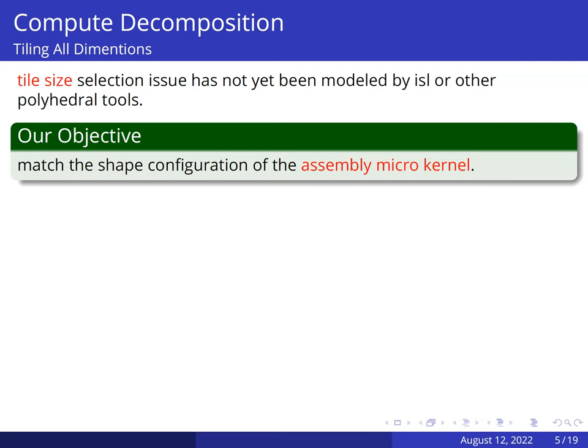Now, I will introduce the first task of our work, Compute Decomposition. That is, break down the code into smaller, other independent blocks such that the compute processing elements can work in parallel. Compute Decomposition is achieved by performing loop tiling. However, the tile size selection issue has not yet been modeled by any polyhedral tools.